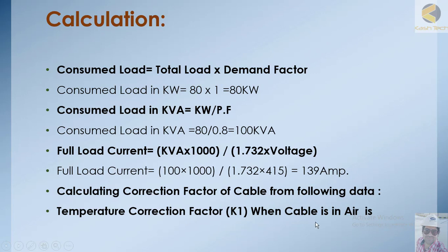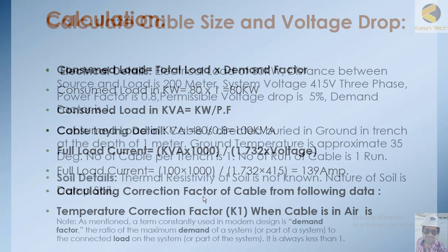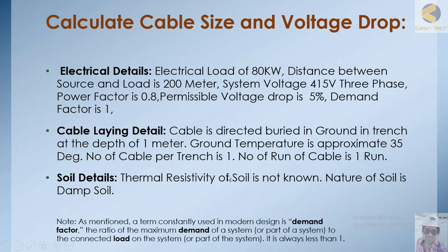Now, to summarize the setup: the load we need to supply is 80 kilowatt, the cable length is 200 meters, the system voltage is 415 volts, the power factor of the load is 0.8, and the permissible voltage drop is 5 percent. The question is which conductor cross-section in square millimeters we should use.